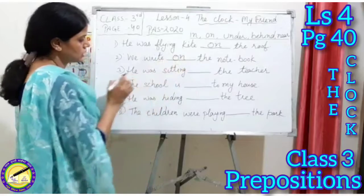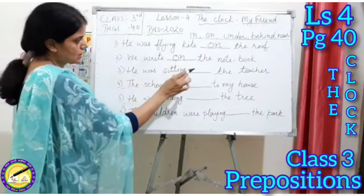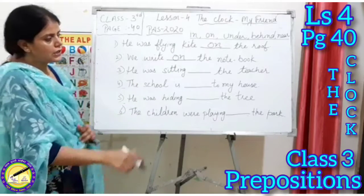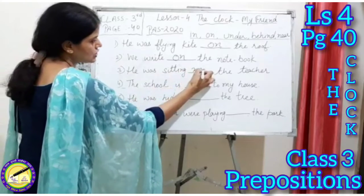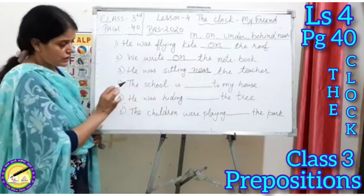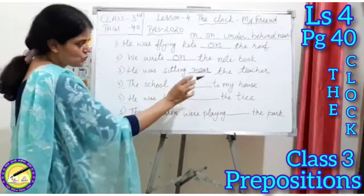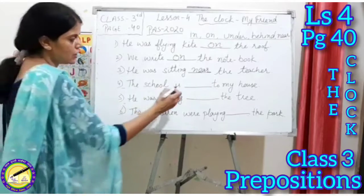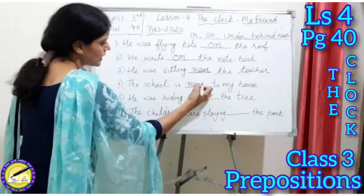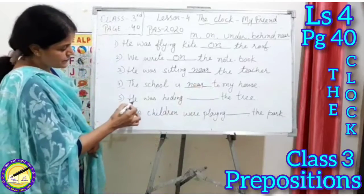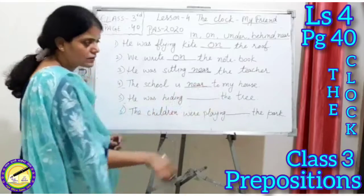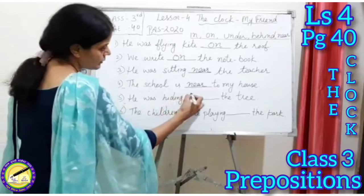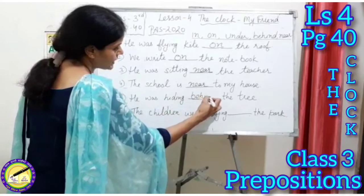Third: he was sitting blank the teacher. The child was sitting close to the teacher, so we write 'near': he was sitting near the teacher. Fourth: the school is blank to my house. Our school is close to our home, so we write 'near': the school is near to my house. Fifth: he was hiding blank the tree. The child was hiding behind the tree, so we write 'behind': he was hiding behind the tree.